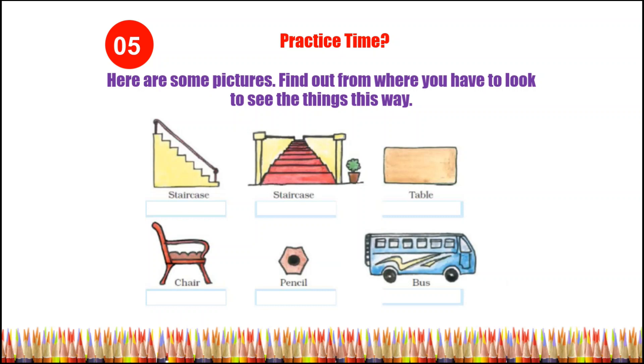In the first row: first picture side view of staircase, second picture front view of staircase, third picture top view of table. In the second row: first picture side view of chair, second picture top view of pencil, and in the last picture side view of bus.